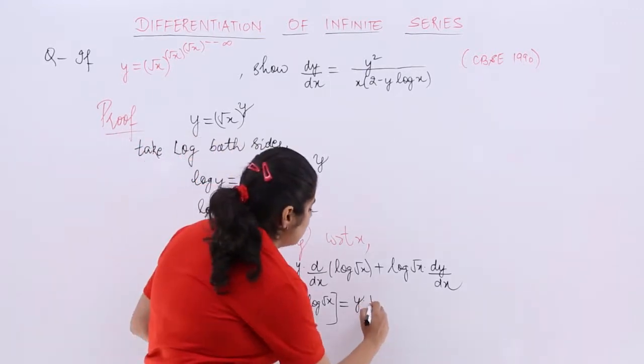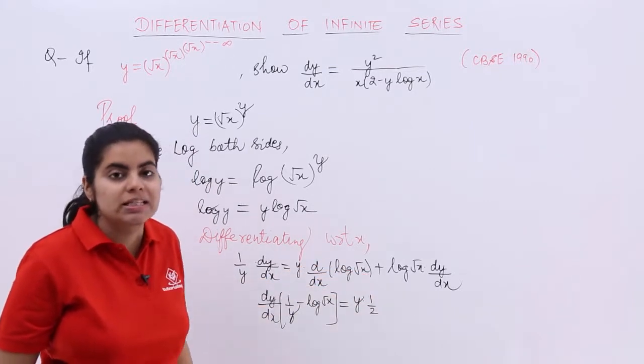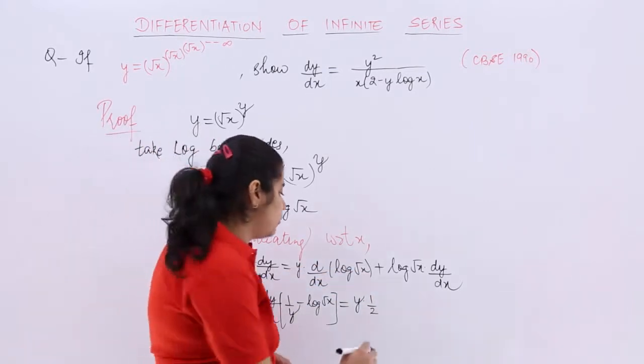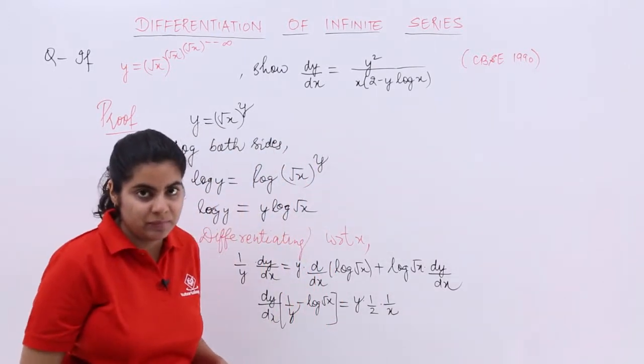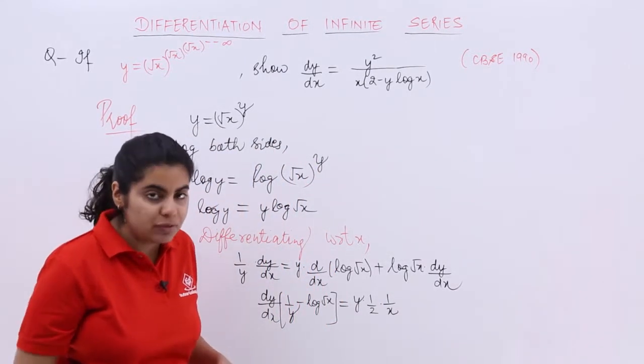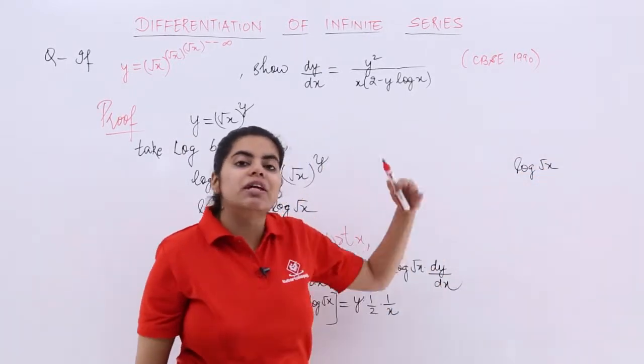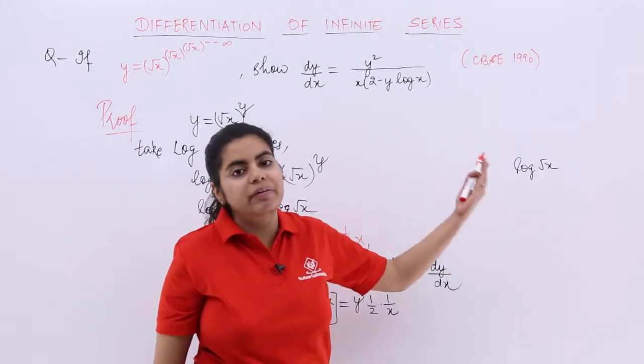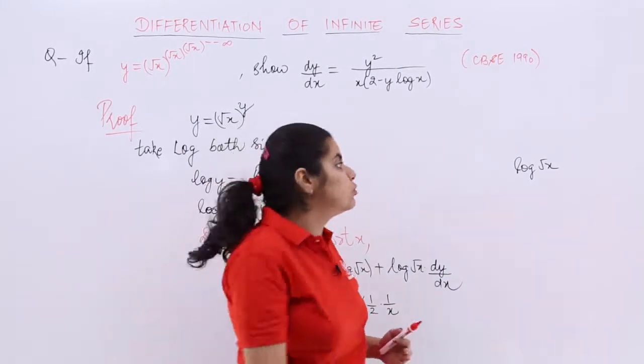And according to the power formula, the power should come outside. So 1 by 2 comes outside. Now you are left with the differentiation of log x. Now what is the differentiation of log x? It is nothing but 1 by x. I again repeat. What we can do is, we can take log root x as log x raised to the power 1 by 2, power 1 by 2 comes in the front. If you do not want to do it, what you can do is,